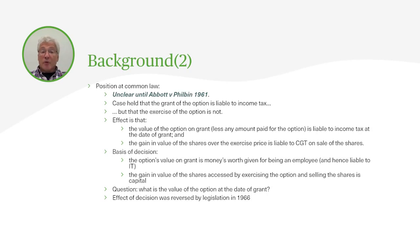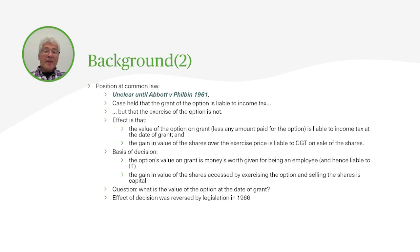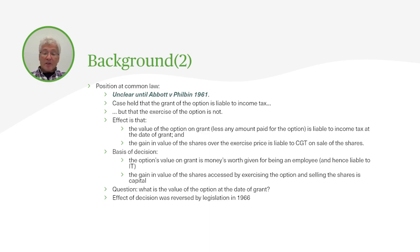Turning first to the position at common law — that's before legislation intervenes — this was very unclear until a case called Abbott v Philbin in 1961. That case held that it is the grant of the option which is liable to income tax as earnings of the employee, but that the exercise of the option is not liable to income tax. The effect of that decision is that the value of the option on grant, less anything paid for the option, is liable to income tax as employment income at the date of grant, but the gain in value of the shares over the exercise price is liable only to capital gains tax on the subsequent sale of the shares, with no tax charge arising on the exercise of the option itself.